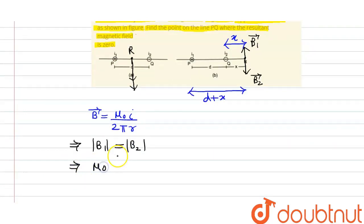So mu naught—let's call the current flowing in wire P as i1. So B1 is due to the Q current, so we have to put i2 here, divided by 2 pi. What is the perpendicular distance from Q wire? It is x.